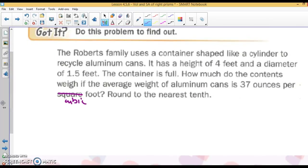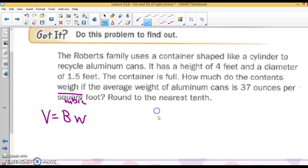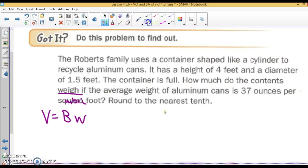The Rubber family uses a container shaped like a cylinder to recycle aluminum cans. It has a height of 4 feet and a diameter of 1.5 feet. The container is full. How much do the contents weigh if the average weight of aluminum cans is 37 ounces per cubic foot? Round your answer to the nearest tenth. If we're looking for how much this holds, we need to look for the volume. So our volume is capital B times W. Capital B is the area of the base.